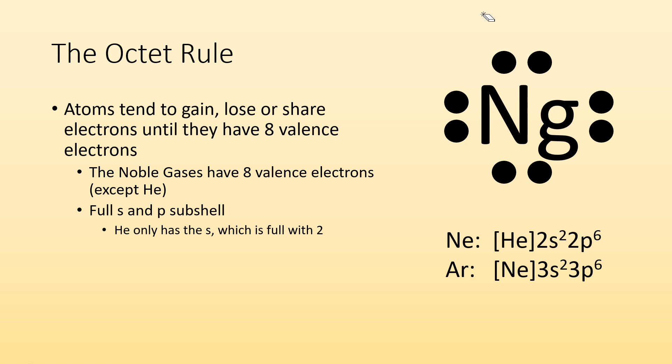So noble gases have a full S and P subshell. So if I'm looking at neon specifically, you can see in the valence electrons, the S and the P subshell are full. Argon, another noble gas, same deal. The S and the P subshell are full. Now, the reason helium is an exception is because it doesn't have a P sublevel. Helium is just 1s².